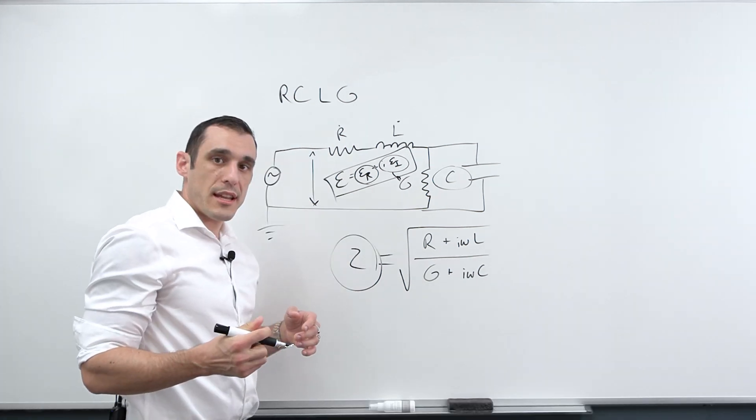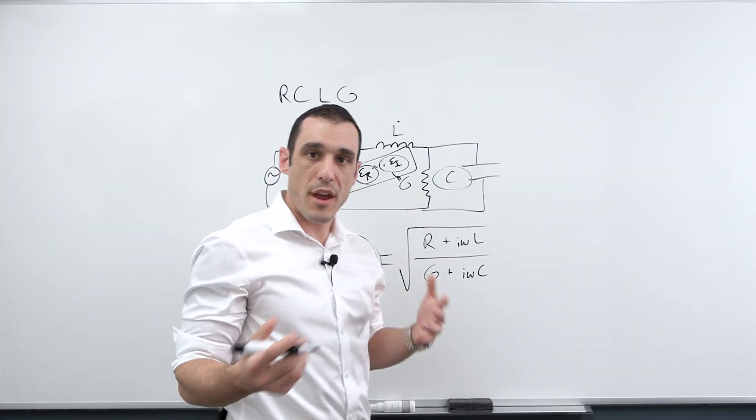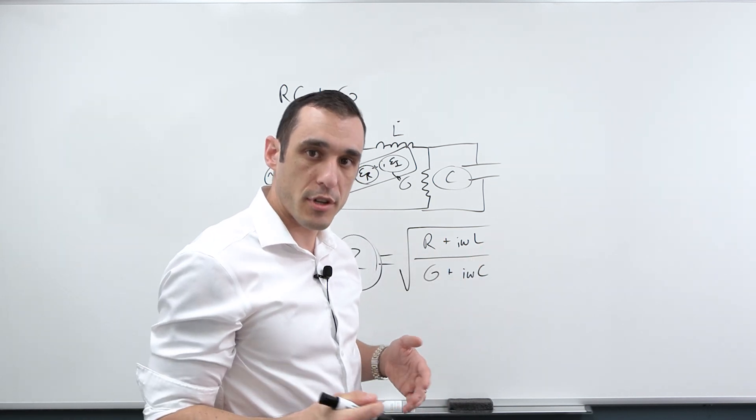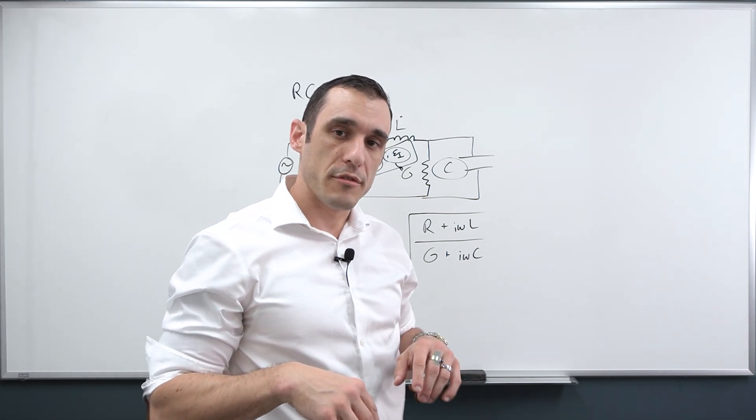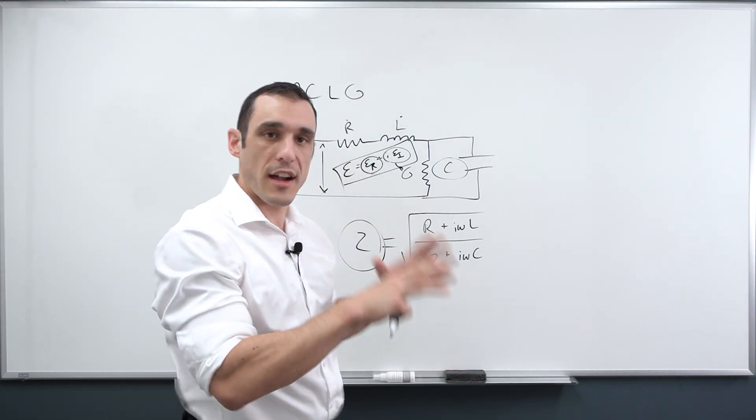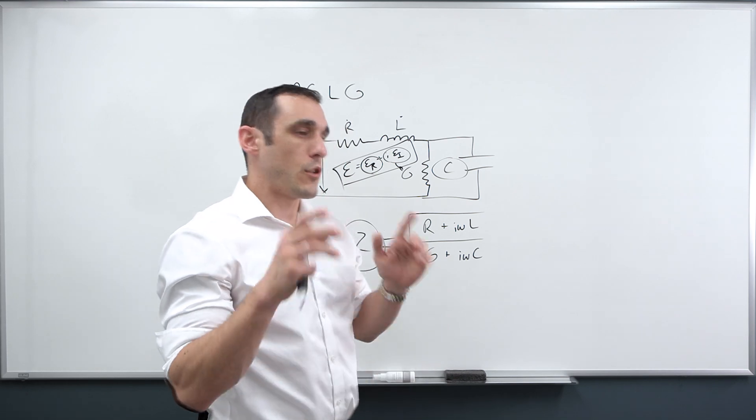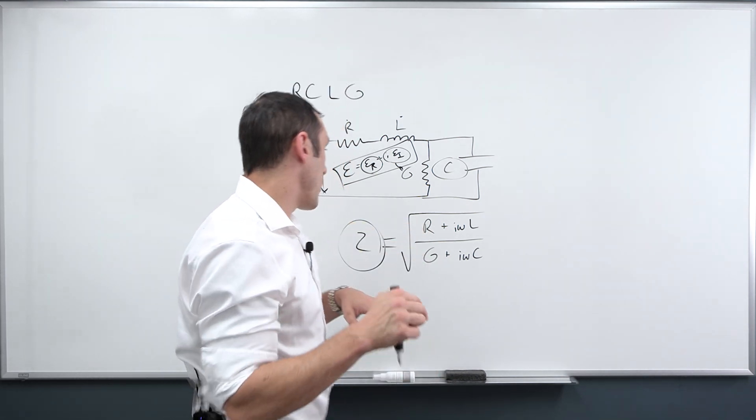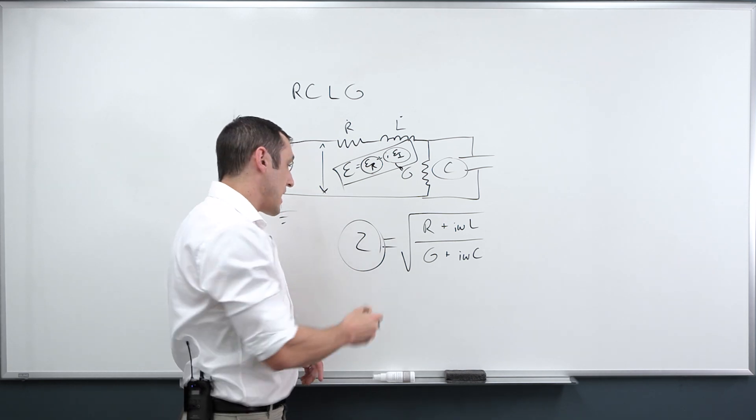The field solver in Altium Designer's layer stackup manager will actually give you a Z value and you can use that to calculate L and C. The other way to do it is to use an equation like what's found in Brian C. Waddle's textbook. We actually talked a little bit about that in the previous video on four layer stackups. And so you can find the equations there. I will also include a link in the blog description that shows where you can get some of those equations to calculate Z.